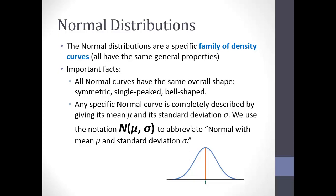Just to remind you of what we're talking about: normal distributions are a particular family of density curves. We talked about density curves on Friday — a smooth curve you can think of as a histogram. They have general properties: they're always positive, always above the horizontal axis, and the area underneath the curve adds up to 1. We'll spend most of our time on normal distributions, which have a bell shape. The notation we'll use is capital N with μ and σ, denoting a normal distribution with mean μ and standard deviation σ.